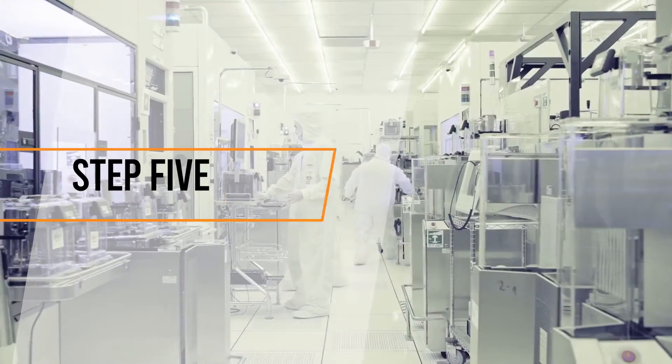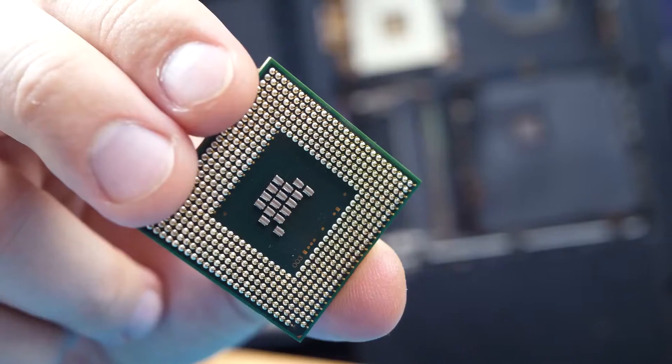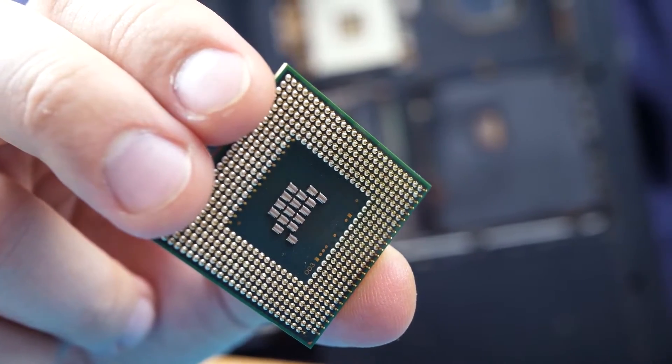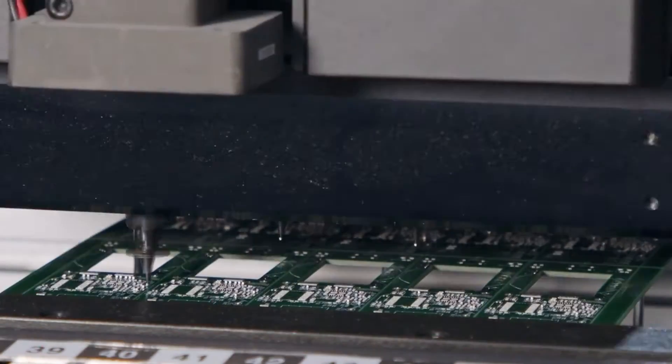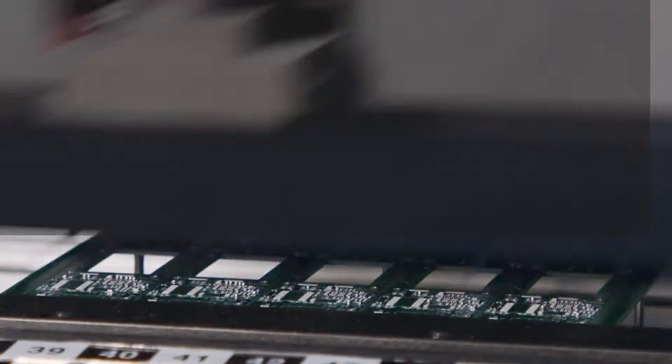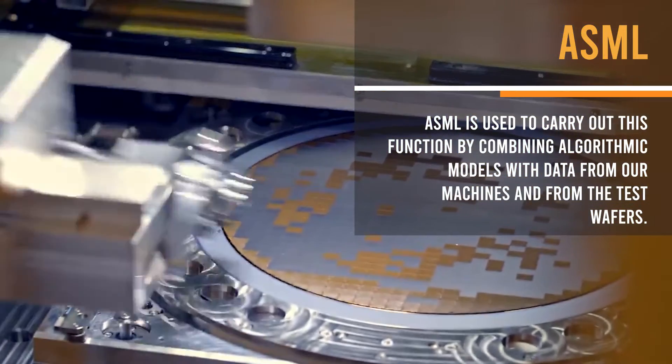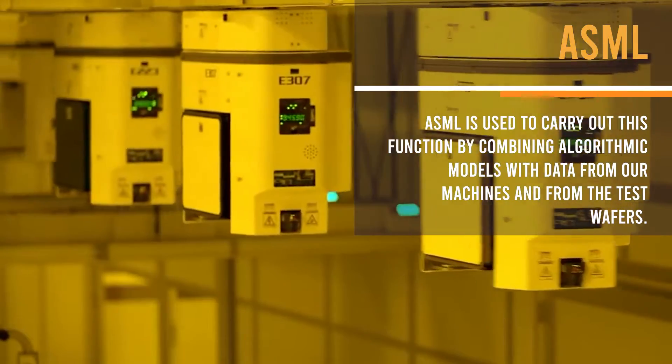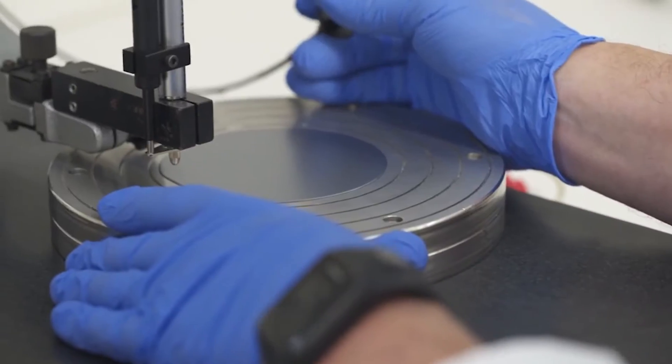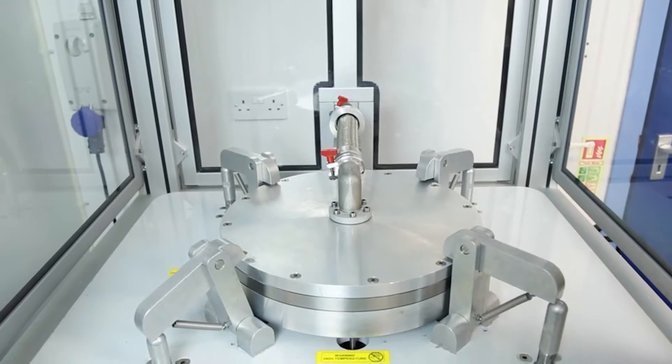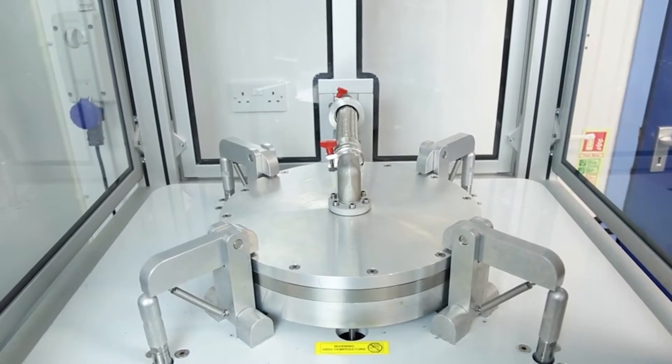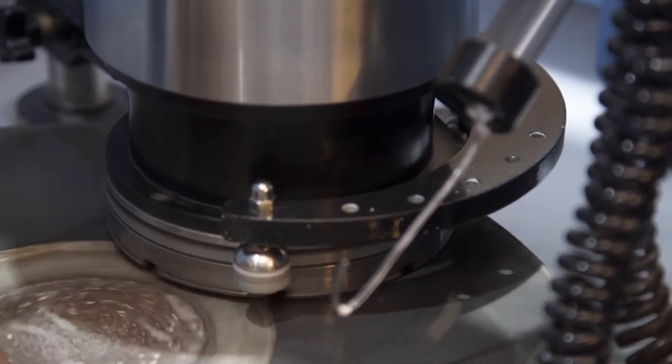Step 5. Computational lithography. At this point, the reticle that contains the silicon pattern to be printed on the wafer most times will be optimized by deforming the pattern intentionally in order to compensate for the physical and chemical effects that take place during lithography. ASML is used to carry out this function by combining algorithmic models with data from our machines and from the test wafers. Lithography tends to be the technical limiter for further advances in feature size reduction and increases transistor speed and silicon area.